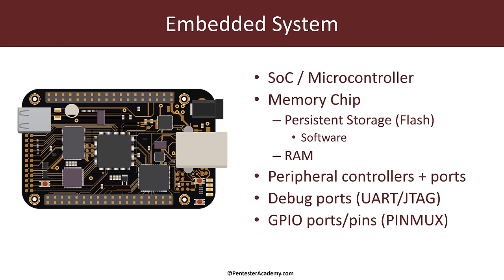If we were to architecturally look at an embedded system, we are going to have the SoC, which is the system on chip or the microcontroller — this is really the brains of the system. The SoC requires some kind of persistent storage such as flash storage where the operating system or programs it has to run will be stored across reboots. It will also require RAM where it can load programs at runtime. Apart from this, depending on the functionality, there may be different peripheral ports, debug ports, GPIO pins, etc.